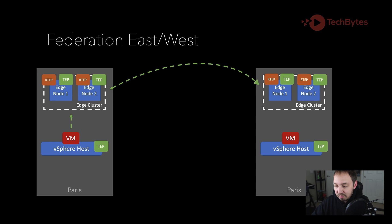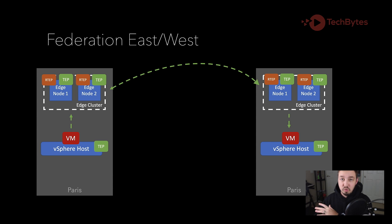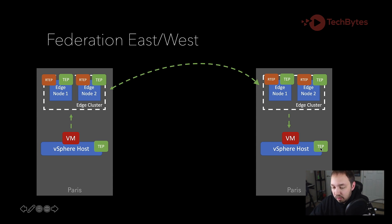Once it gets to the destination site, that encapsulation is stripped and it's then re-encapsulated and sent on its way to wherever it was supposed to go in the first place — in this case, that would be this TEP right here. So that's how federation east-west works.